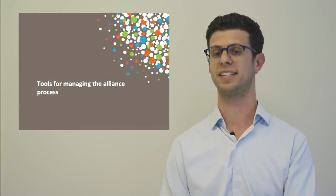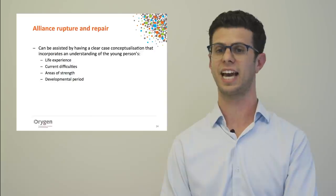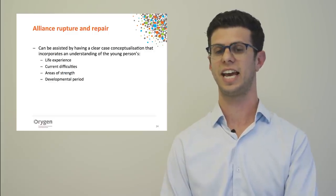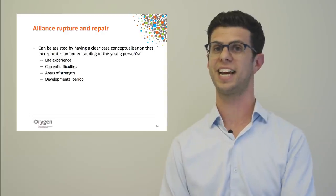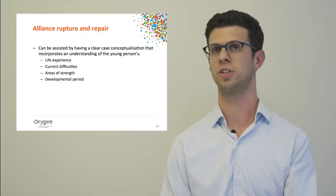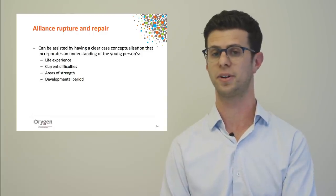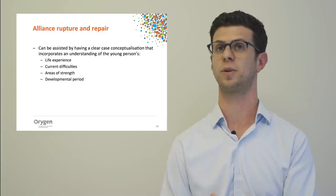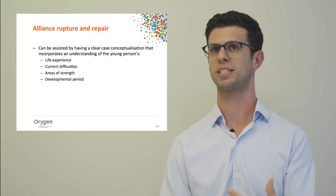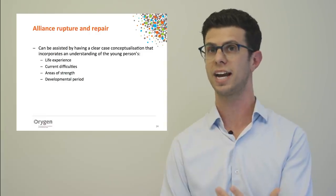Let's turn to tools for managing the alliance process. Alliance rupture and repair can be assisted by having a clear case conceptualisation incorporating the young person's life experience, current difficulties, areas of strength, and developmental period. Understanding the young person lets us differentiate between minor ruptures we can largely ignore and significant ruptures we need to work through. For example, one young person may not care if you're late to a session, whereas another might experience it as hugely disrespectful and need it addressed.